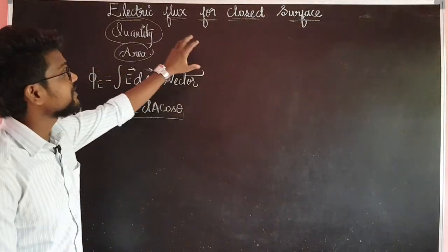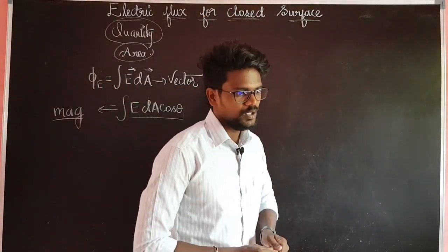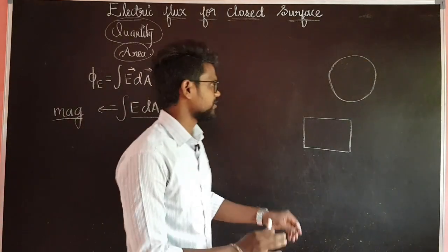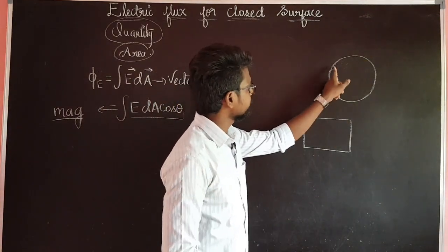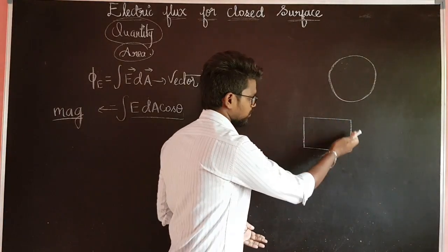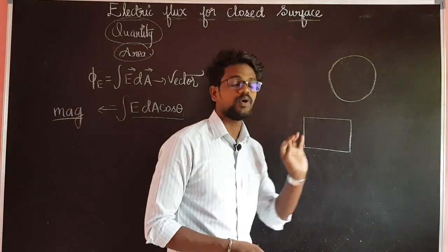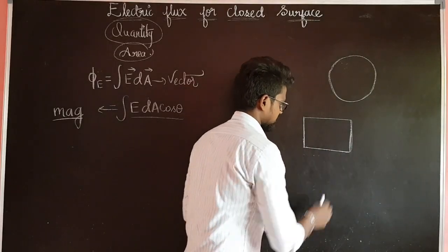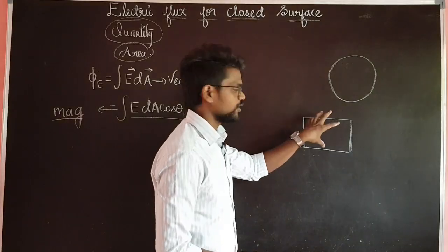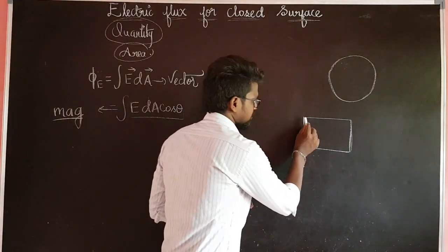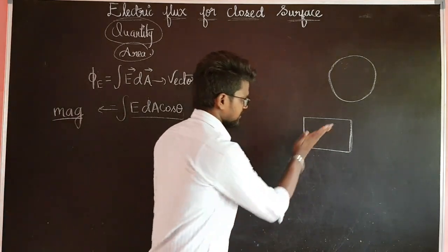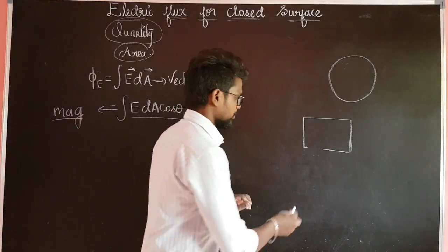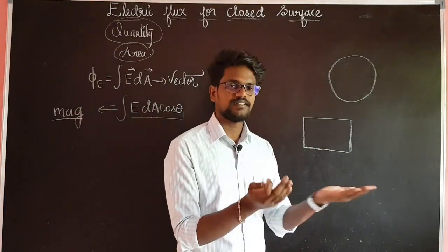Now suppose we have a closed surface. This is a box — a closed surface, or an object. If all four edges are closed, it is considered a closed surface. If one side is open, it is not considered a closed surface. A closed surface is completely enclosed. That is a closed surface, and in this term, we have a closed surface — that is electric flux.